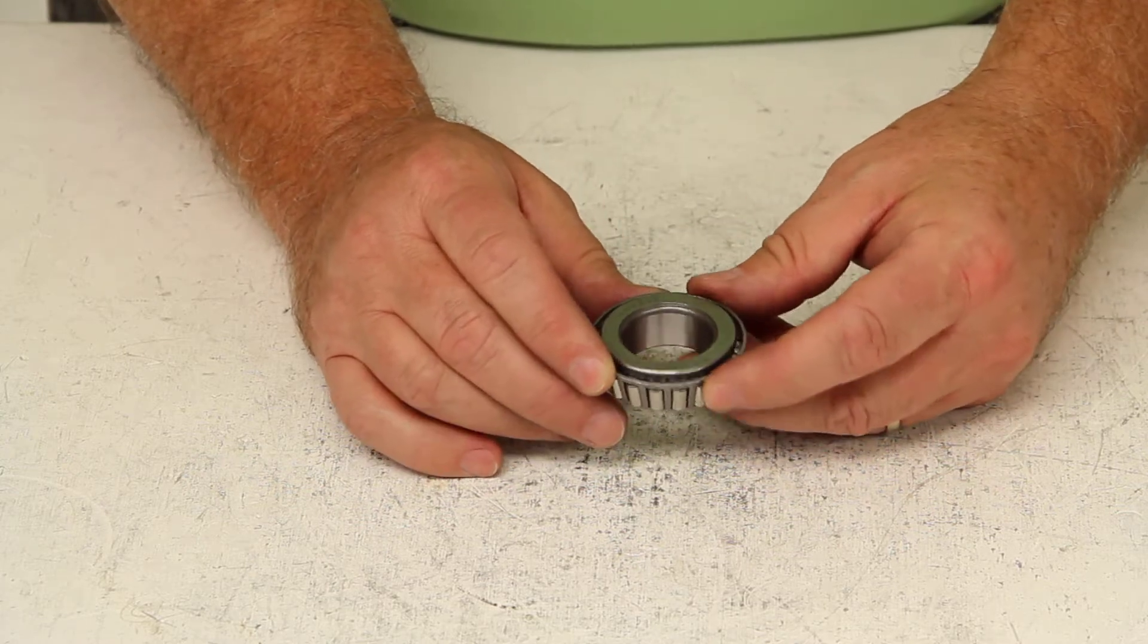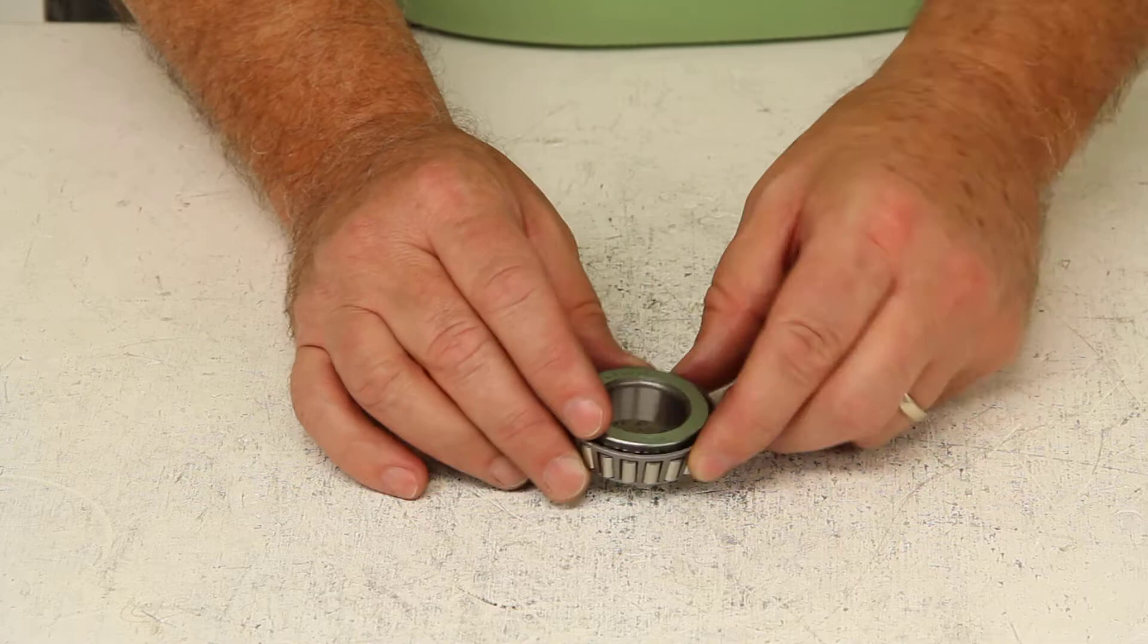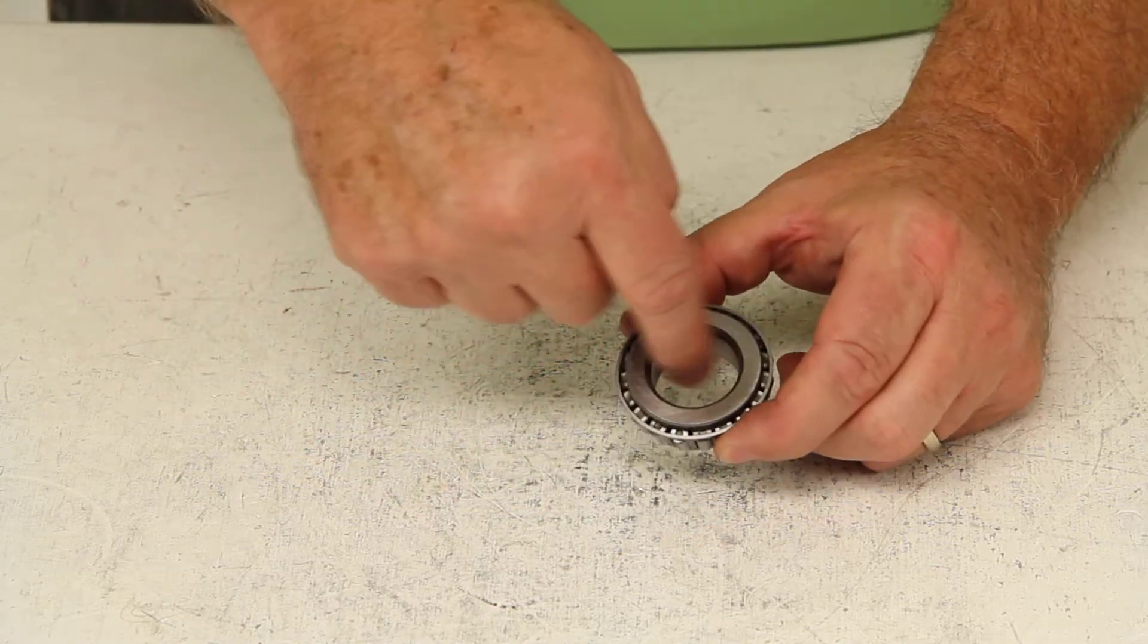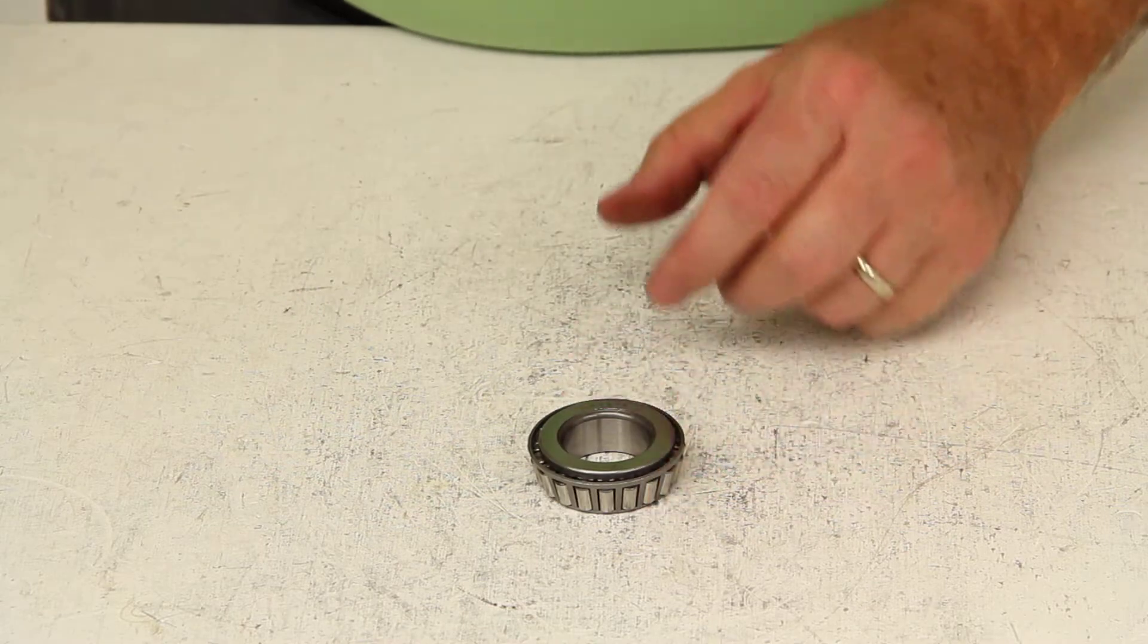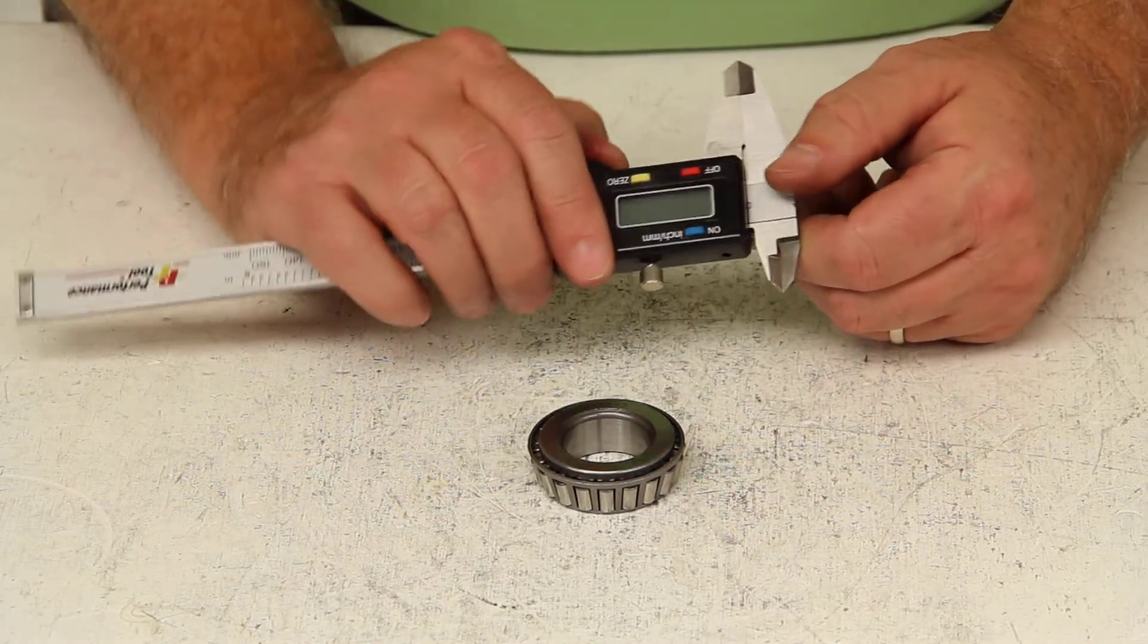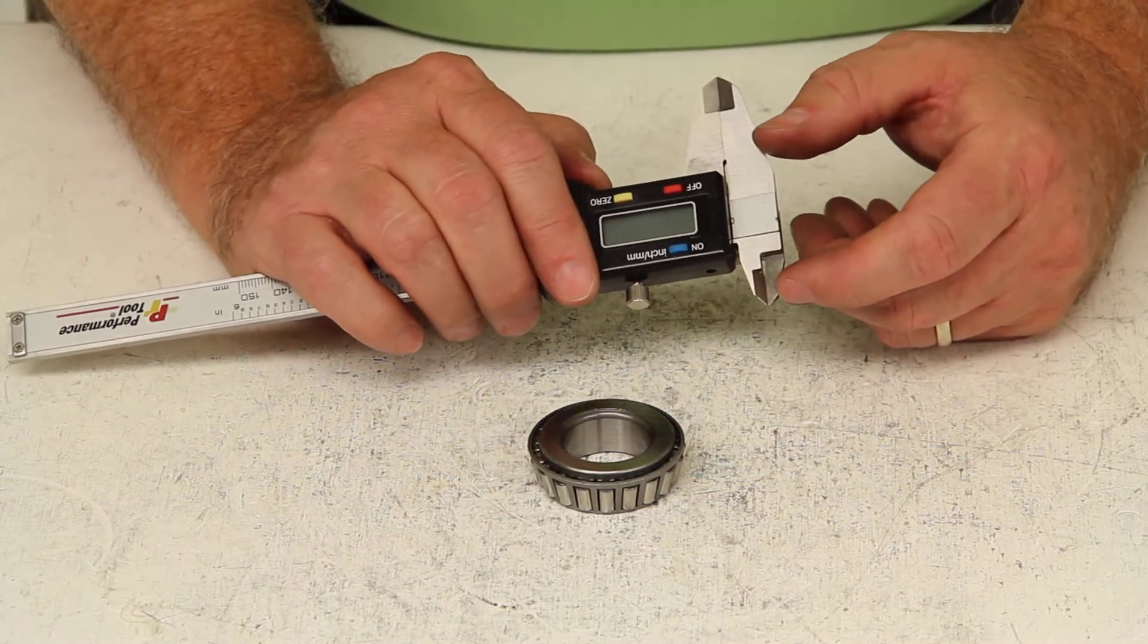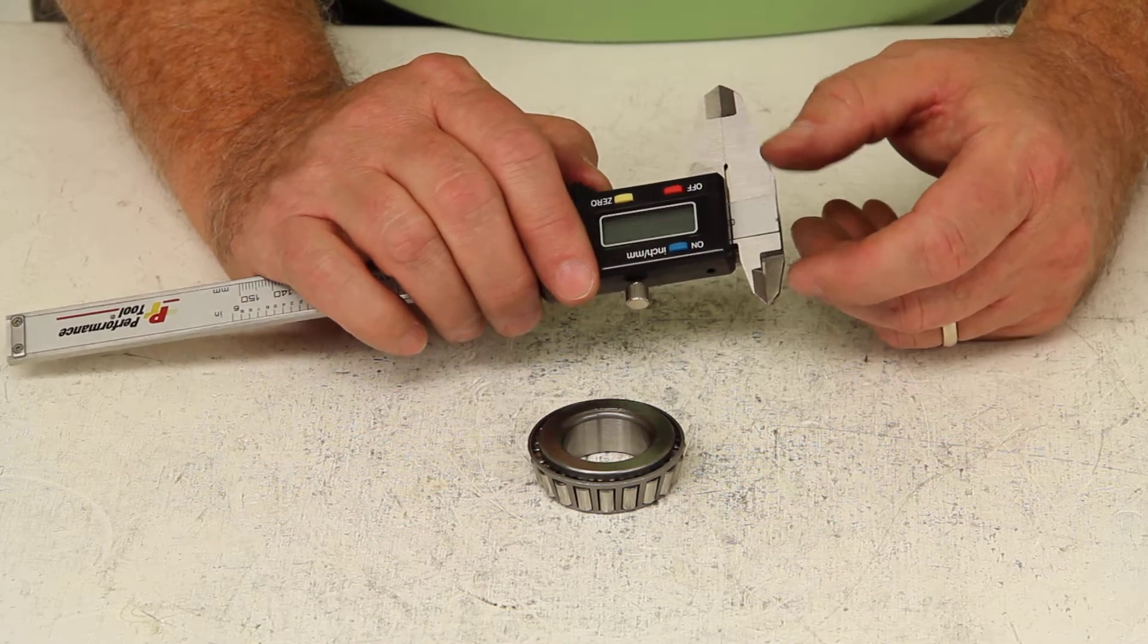Now if you can't have access to or there is no part number on the bearing, you will need to measure the inside diameter of the bearing. That is the most critical measurement. You would need to use something like a digital caliper because it is measured in thousandths of an inch. A ruler or tape measure won't work.